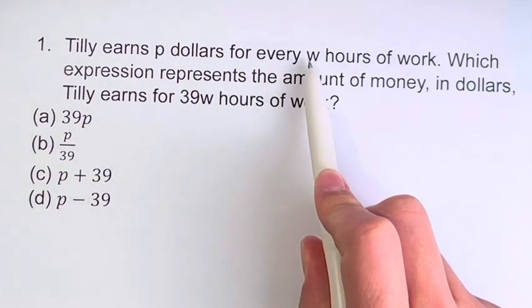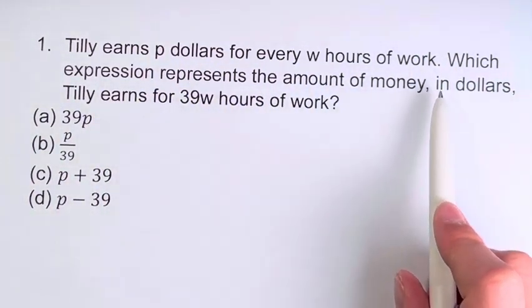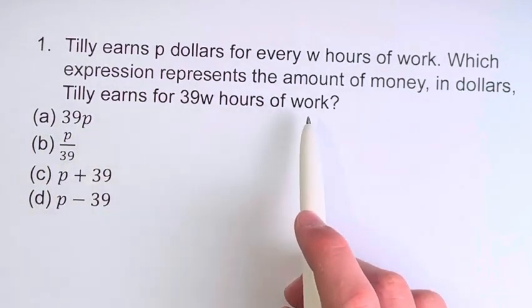we're told that Tilly earns P dollars for every W hours of work. And we're asked, which expression represents the amount of money in dollars that Tilly earns for 39W hours of work?